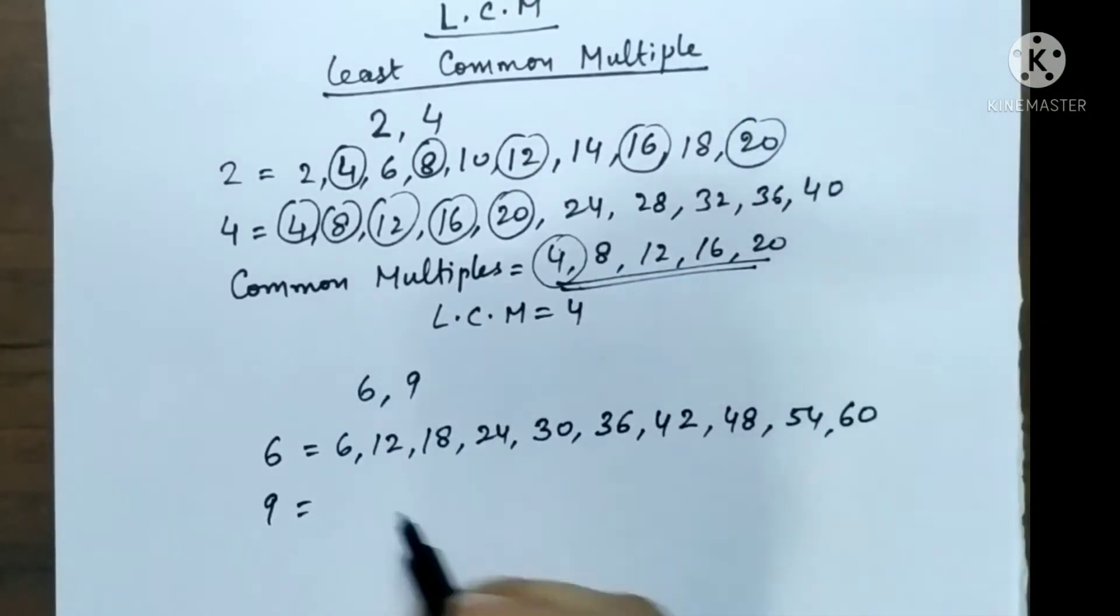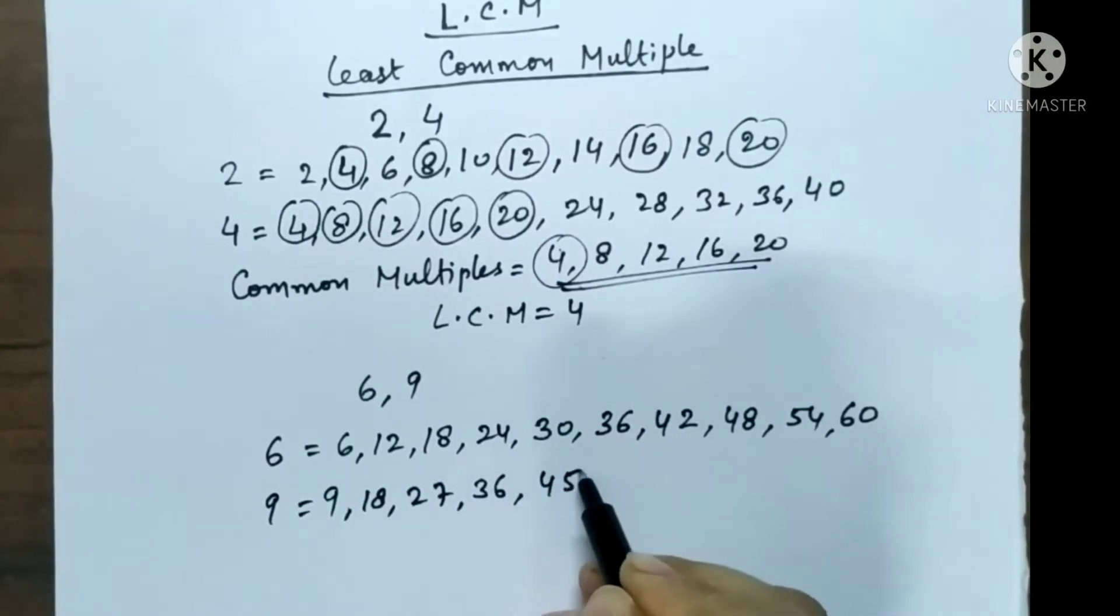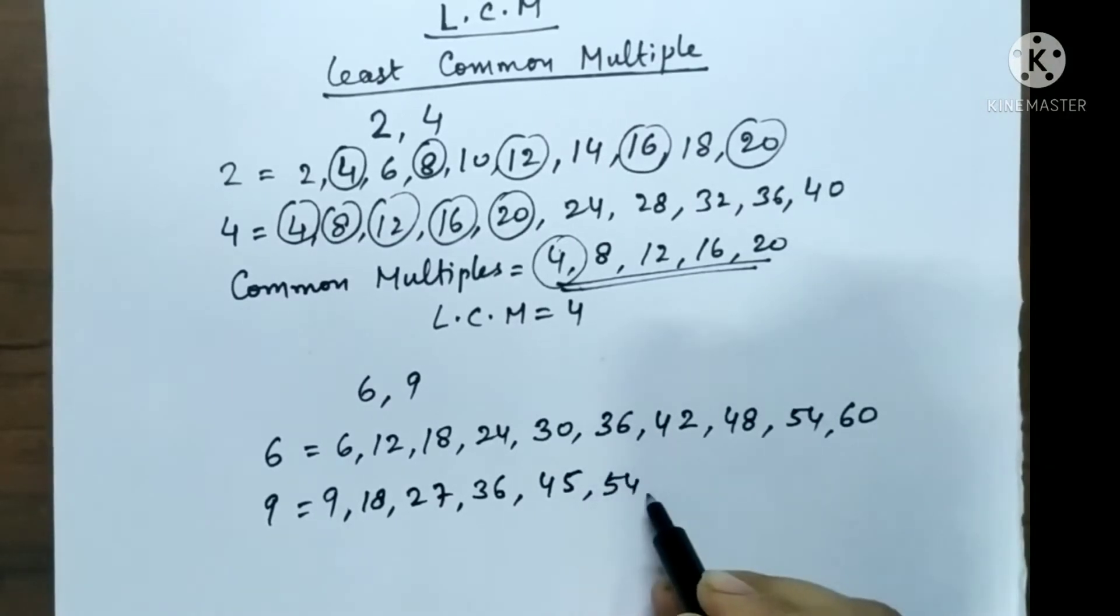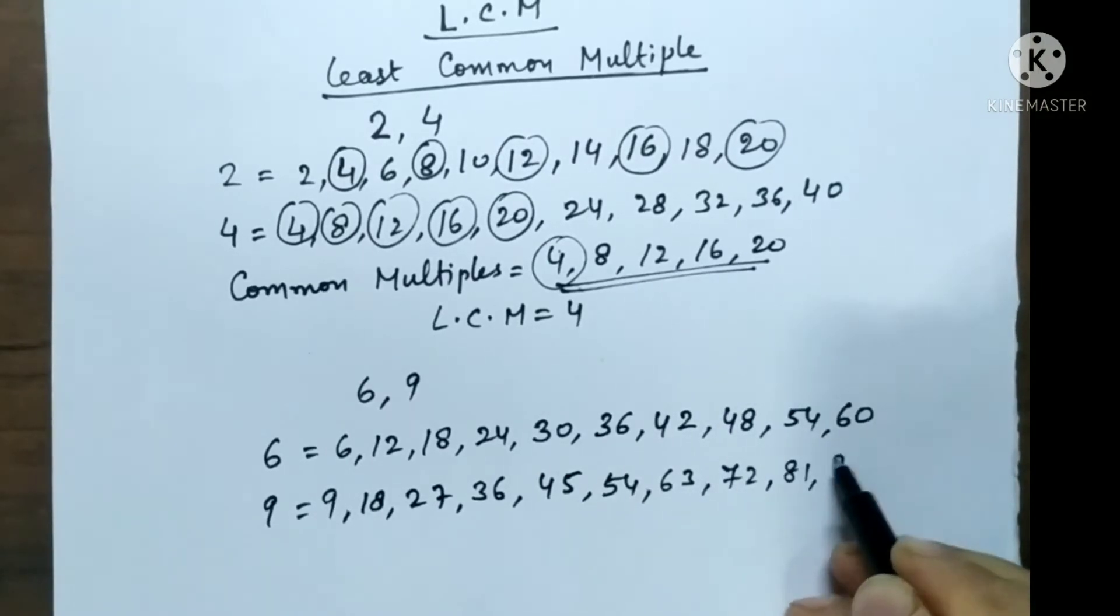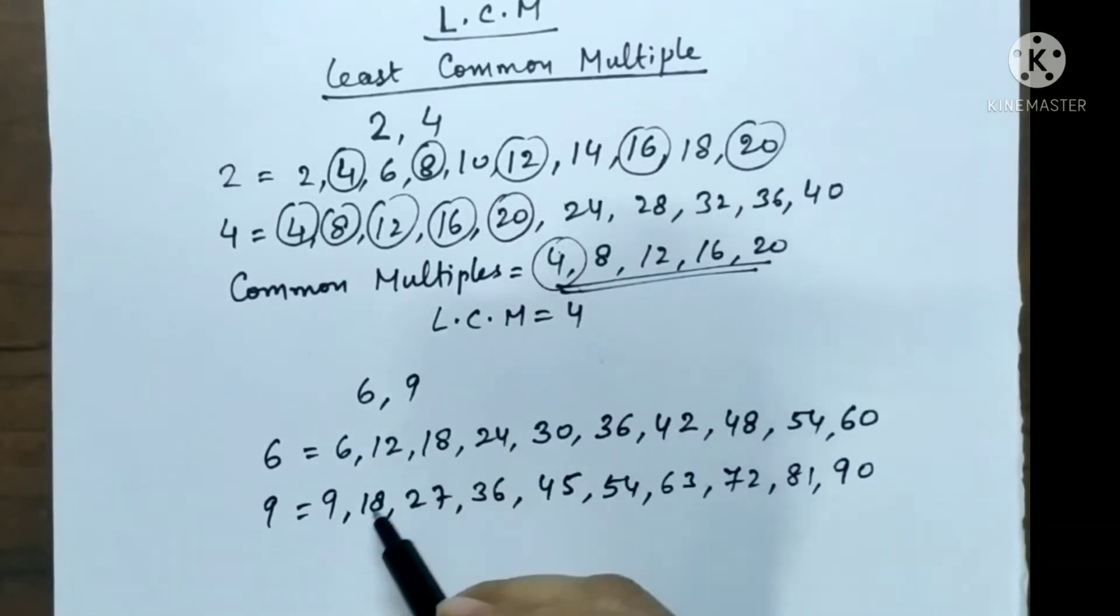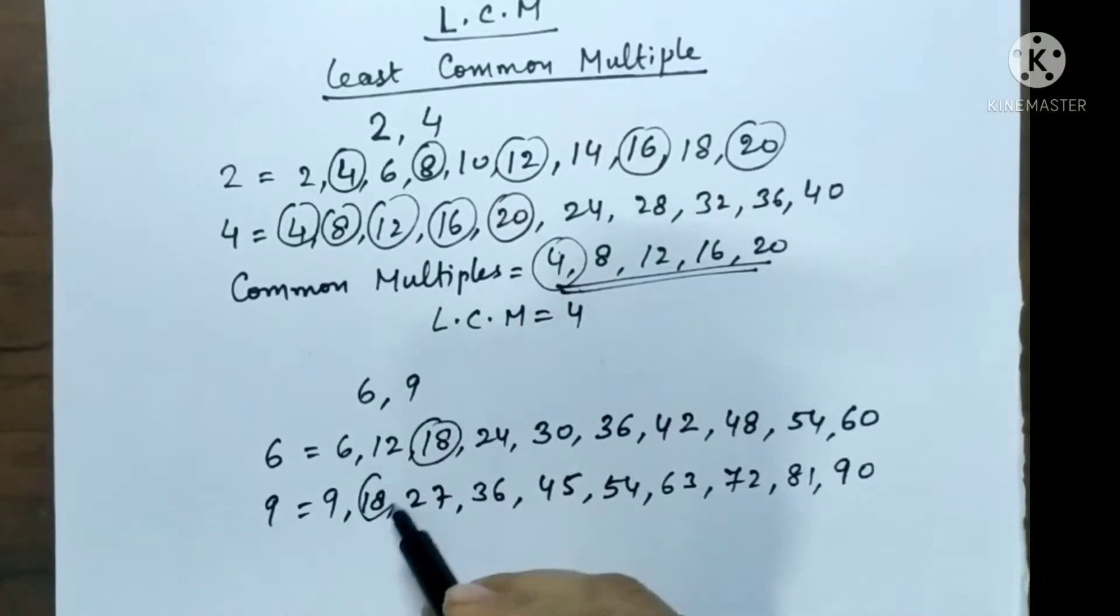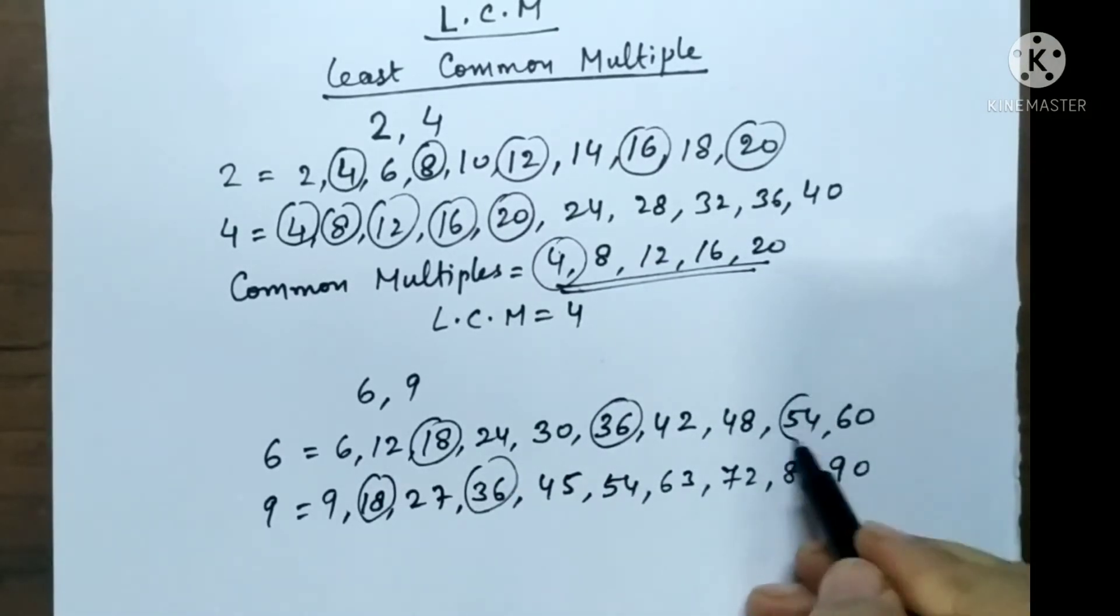9 ones are 9, 9 twos are 18, 9 threes are 27, 9 fours are 36, 9 fives are 45, 9 sixes are 54, 9 sevens are 63, 9 eights are 72, 9 nines are 81 and 9 tens are 90. The next step is again we find out the common numbers. The common numbers are 18, 36, 54.